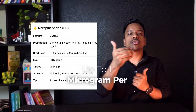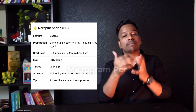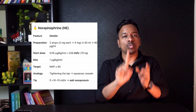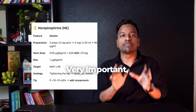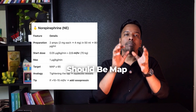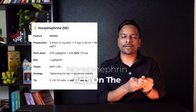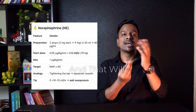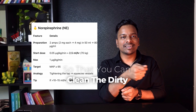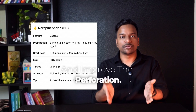For example, if a person is 70 kg, 0.05 into 70 becomes 2.5 ml per hour on the pump. Maximum we can give is up to 1 microgram per kg per minute. Target in all these patients should be MAP more than 65 mmHg. Norepinephrine acts on the vessels, constricting them to increase the pressure so that blood can reach the target organ and improve perfusion.